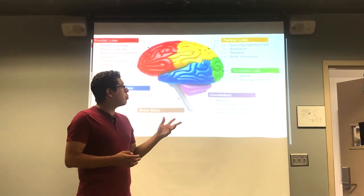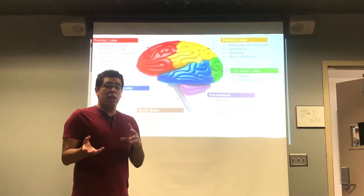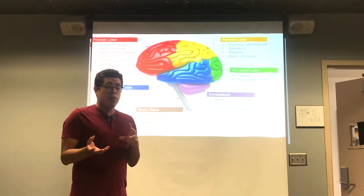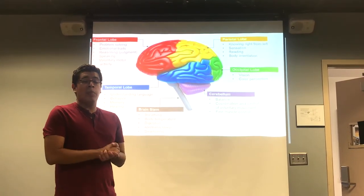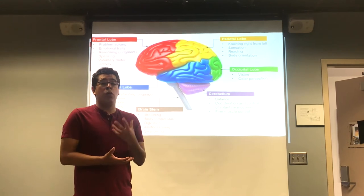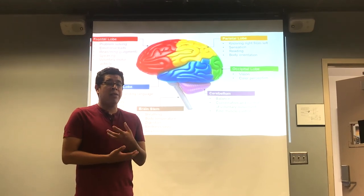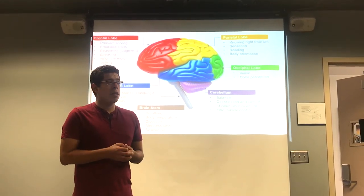We also have the occipital lobe, which deals with vision and color perception. Another section is the hippocampus. The hippocampus stores memory and it is a very important part of the brain.